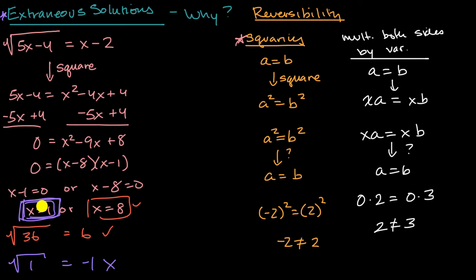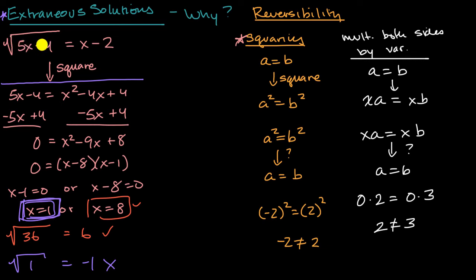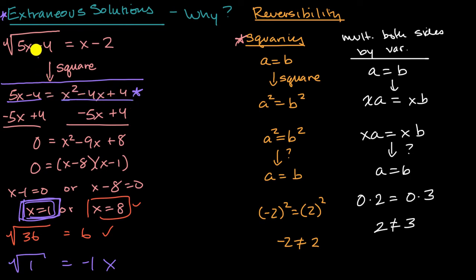Pause this video and look back to see which steps x equals one still works for, and what step it does not work for. You'll see that x equals one works for all the equations below the squaring step — it just doesn't work for the original equation: the square root of five x minus four equals x minus two. The issue is that squaring is not a reversible operation. This is analogous to saying we know a squared equals b squared, but that doesn't mean a necessarily equals b.